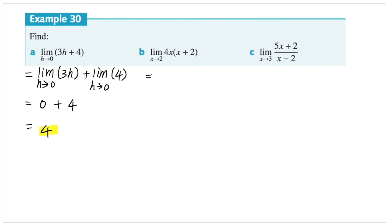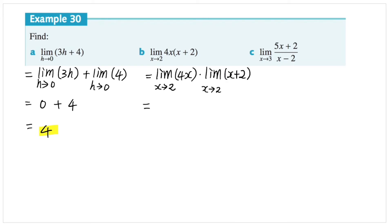The second question is multiplication. Let's find them separately. The limit of 4x as x approaches 2, times the limit of x plus 2 as x approaches 2. 4 times 2 equals 8, times 2 plus 2 equals 4, and the answer is 32.